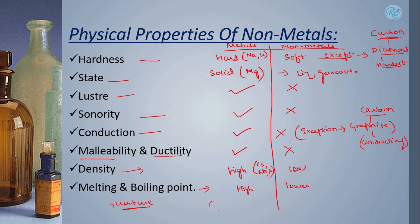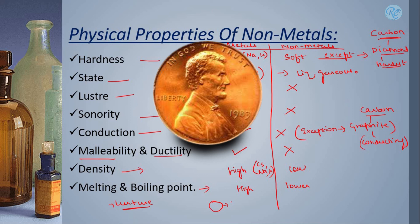Now, this property of metals, of having the shiny appearance, if you see any coin like a new coin made up of copper, you'll find that this is very shiny. But after some time, what happens is, there is formation of compounds on it.